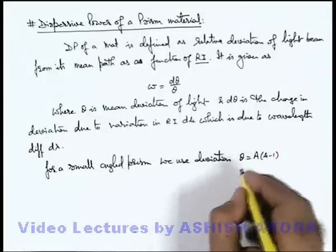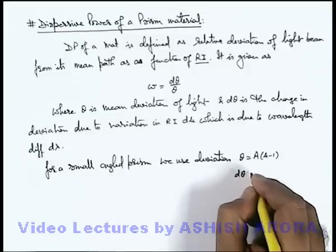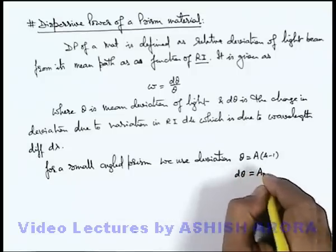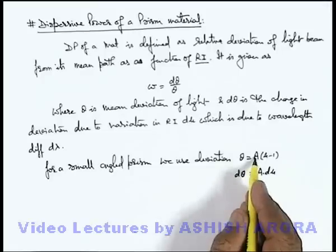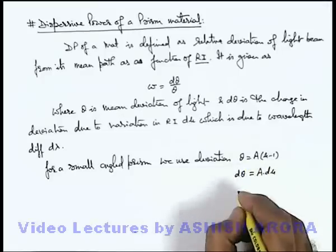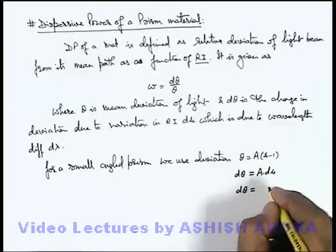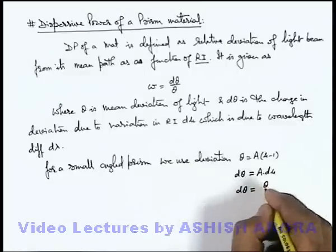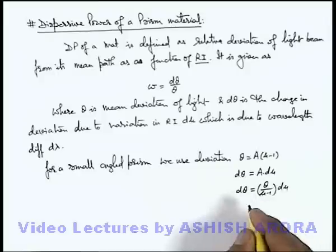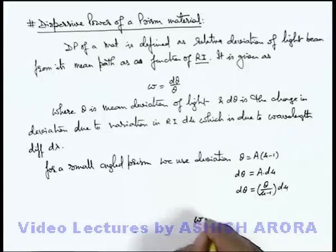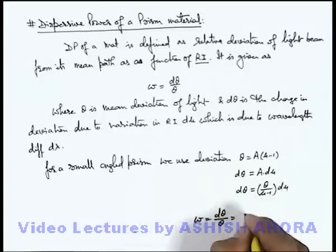If we differentiate this expression, this will give us dθ equals A multiplied by dμ. So here we can substitute the value of A, which is θ/(μ-1). So dθ will be given as θ/(μ-1) multiplied by dμ. From this relation, dispersive power of material will be written as dθ/θ, that is, dμ/(μ-1).